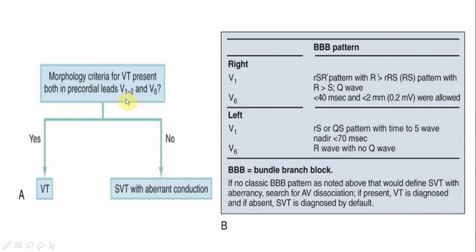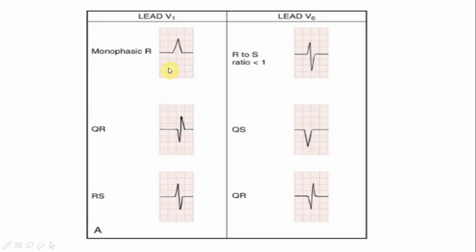For the morphological characteristics in Step 4, look at V1 and V6. In V1: if there is a predominantly R wave, or a big R with a small Q, or a big R with a small S — meaning the RS ratio in V1 is more than 1 — combined with an RS ratio less than 1 in V6, this is consistent with VT.